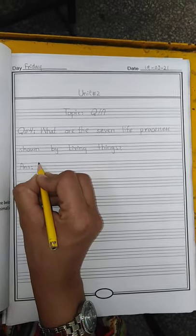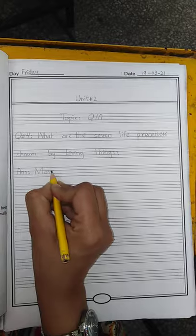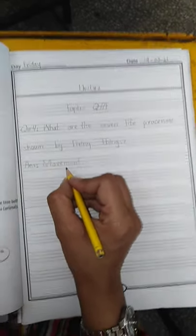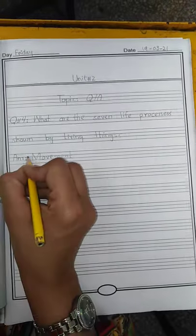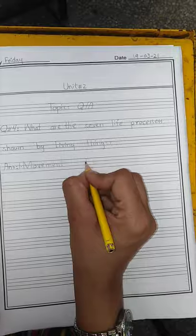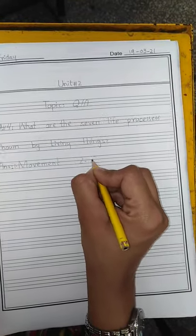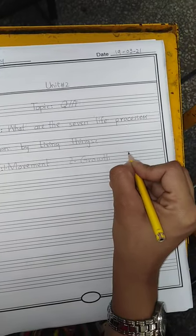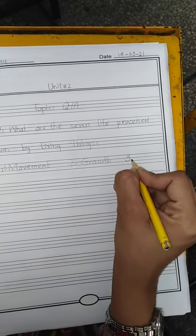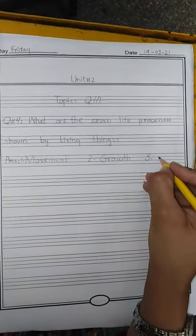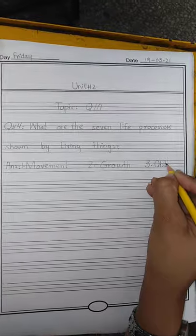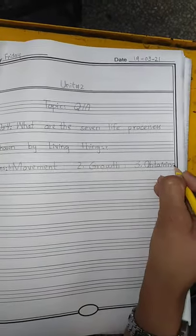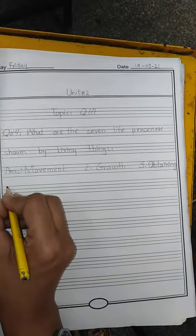Now write the answer. Number one: Movement — M-O-V-E-M-E-N-T. Number two: Growth — G-R-O-W-T-H. Number three: Obtaining food — O-B-T-A-I-N-I-N-G, obtaining food.